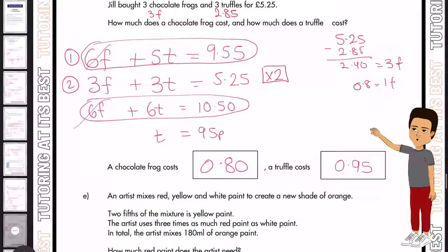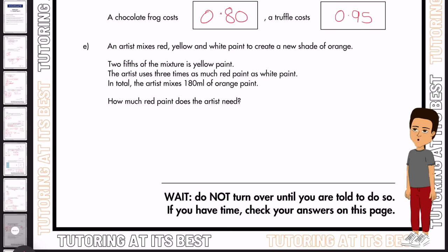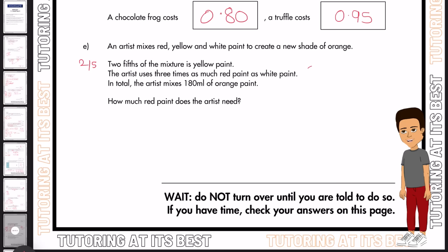Part E. An artist mixes red, yellow and white paint to create a new shade of orange. Two fifths of the mixture is yellow, and the artist uses three times as much red paint as white paint. And that again is red to white. So in total, the artist mixes 180 milliliters of orange paint. So how much red paint does the artist need?